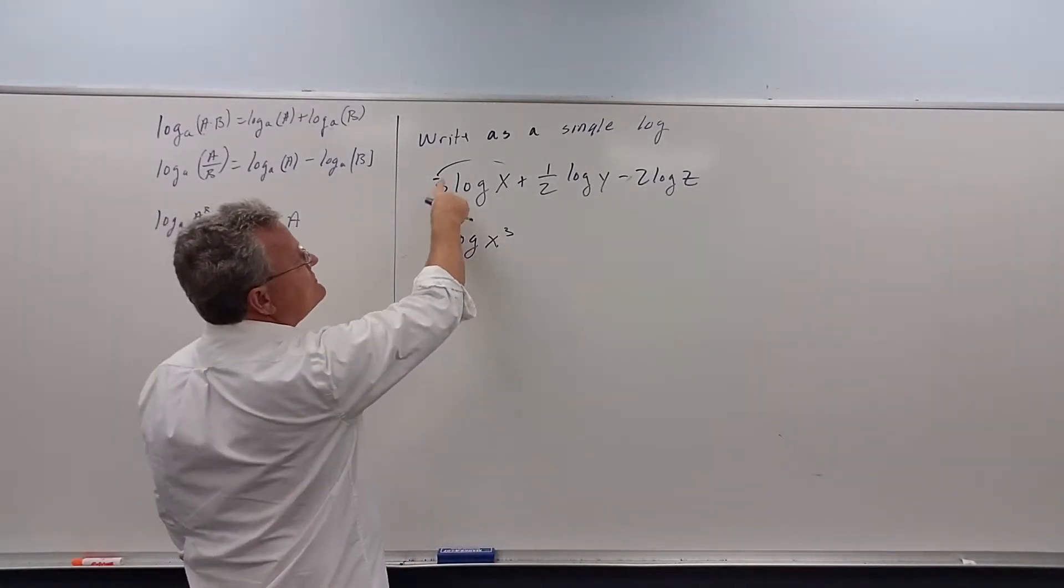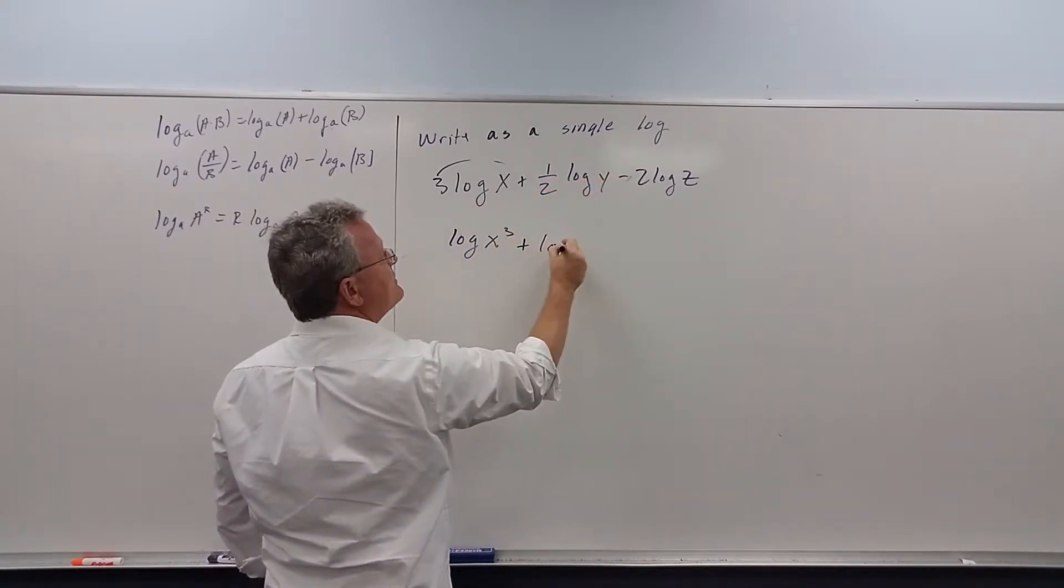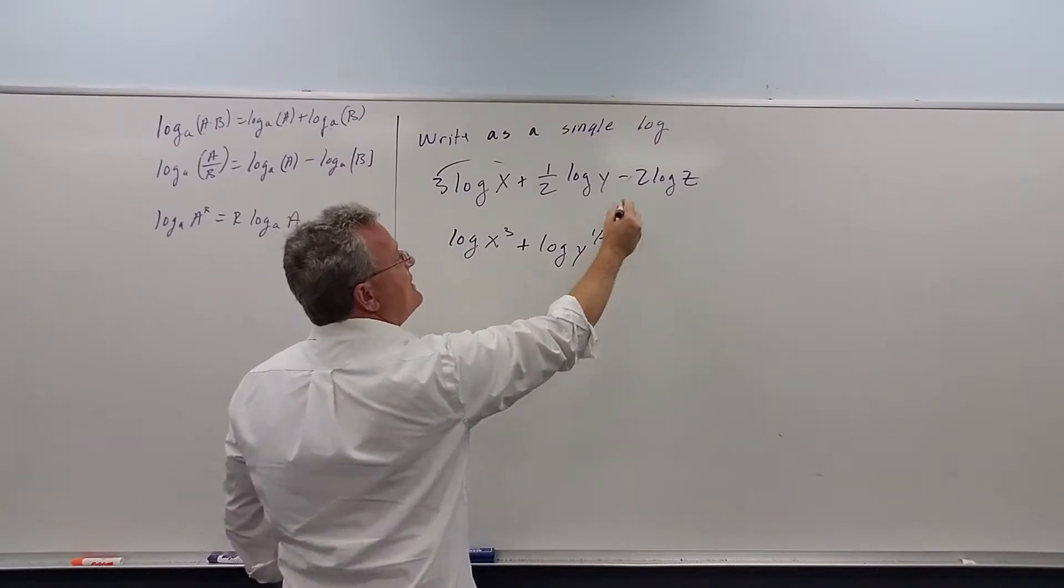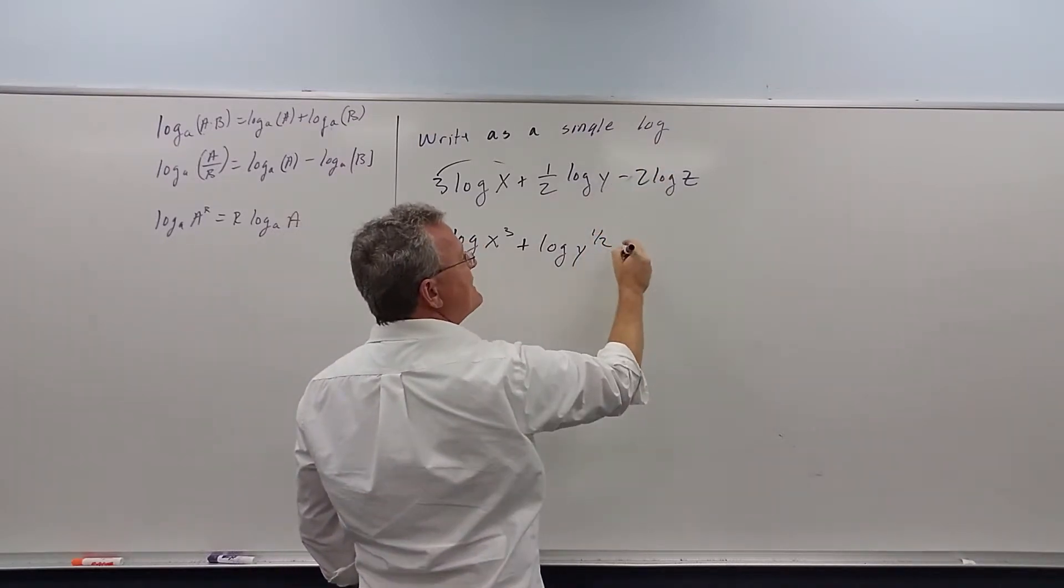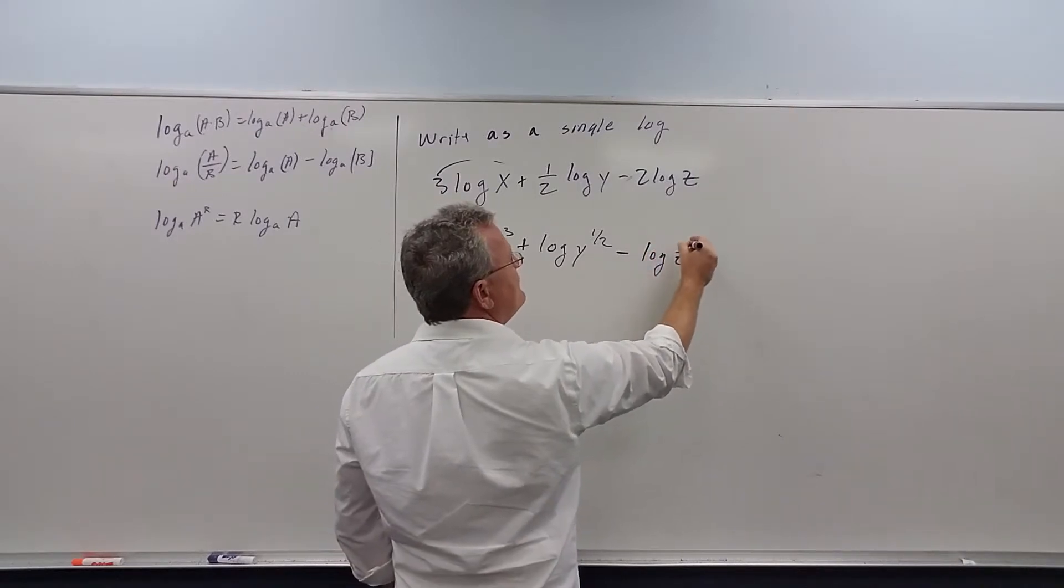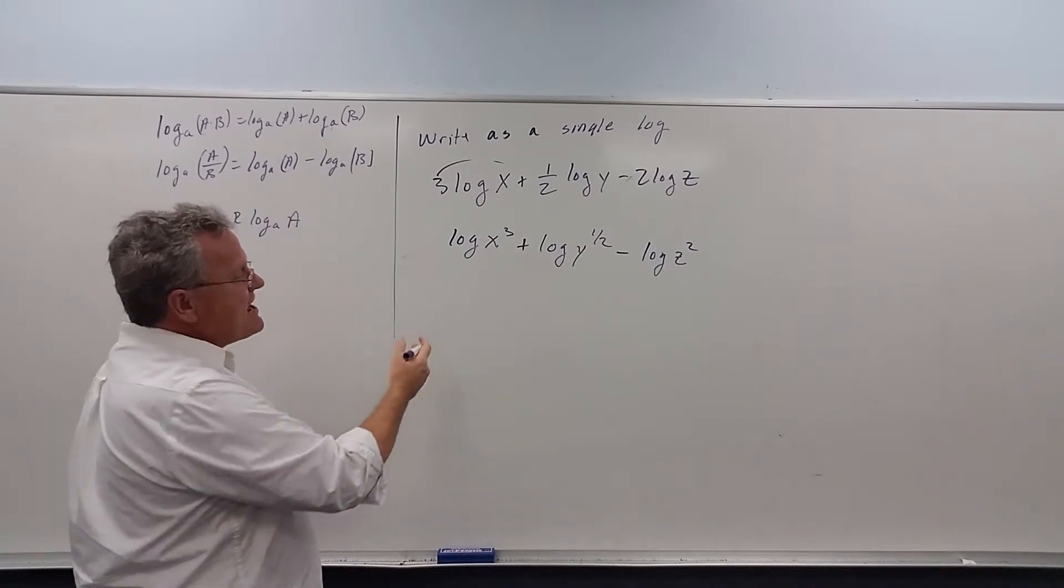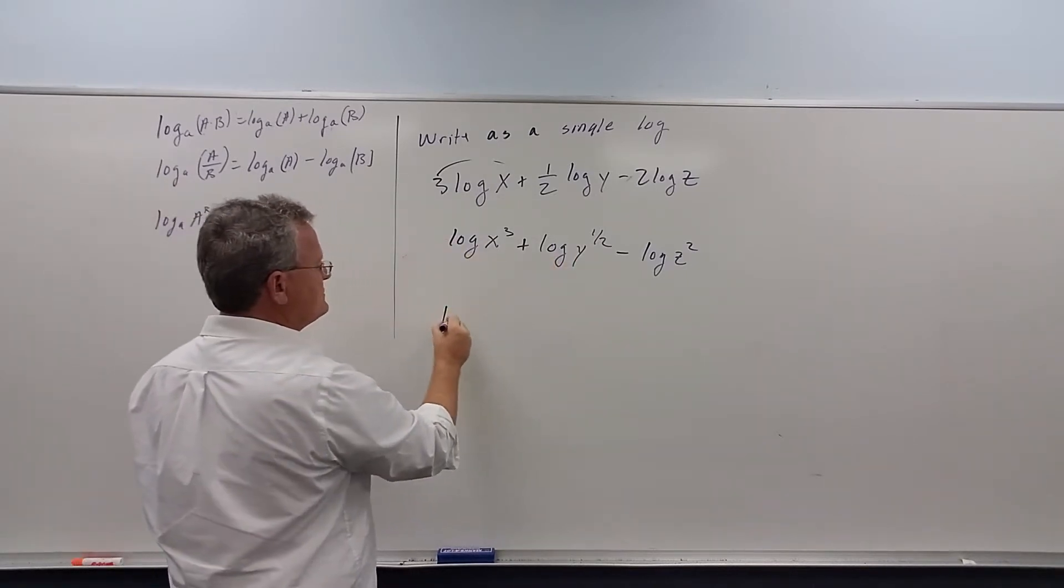But anyways, so we do that, bring the half up as a power, we get the log of y to the half. And then I'm going to leave this as a negative, and then just bring the 2 up, z to the 2. The reason I leave that as a negative is because now we can write this as a single log.